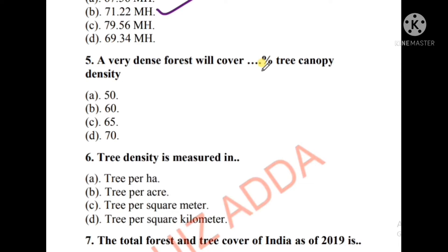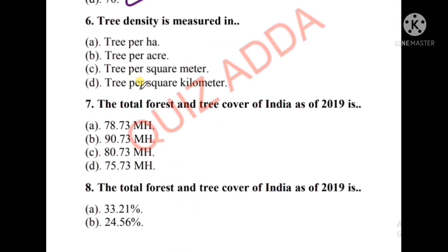Question number five: A very dense forest will cover how much percentage of tree canopy density? The options are 50, 60, 65, or 70. The right answer is 70 — a very dense forest will cover 70% of tree canopy density.